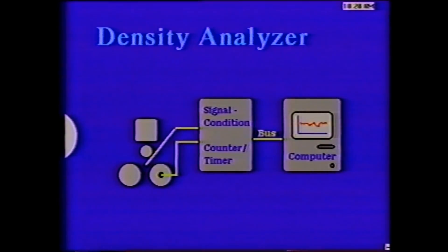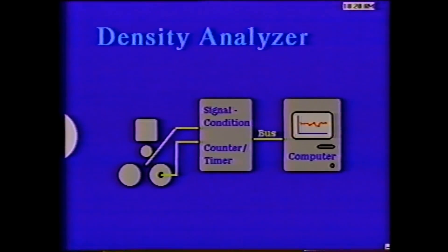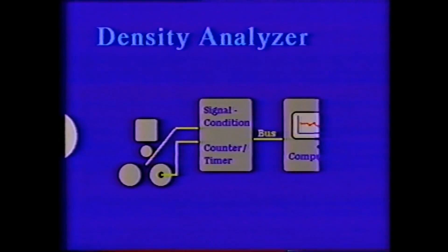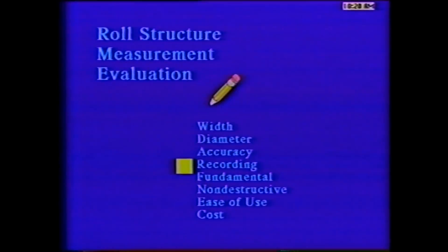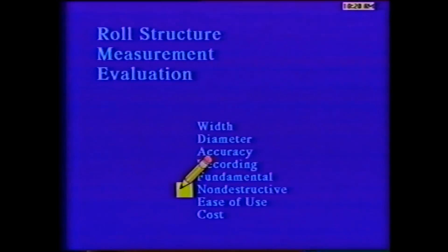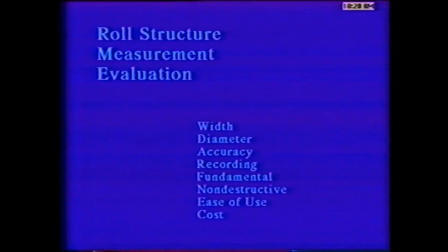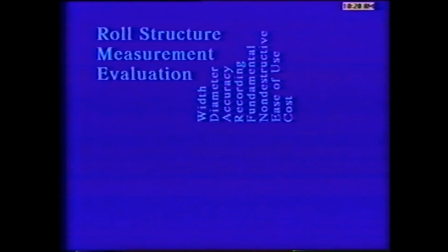With so many methods available, we would like to evaluate each to find the best for our particular finishing room situation. Evaluation begins by checking each method against several important measurement criteria. These criteria include: the ability to profile a roll either across the width or through the diameter, the accuracy of the measurement, the ability to record data, whether it is directly related to stress or strain, whether it is non-destructive, how easy it is to use, and the cost of operation.